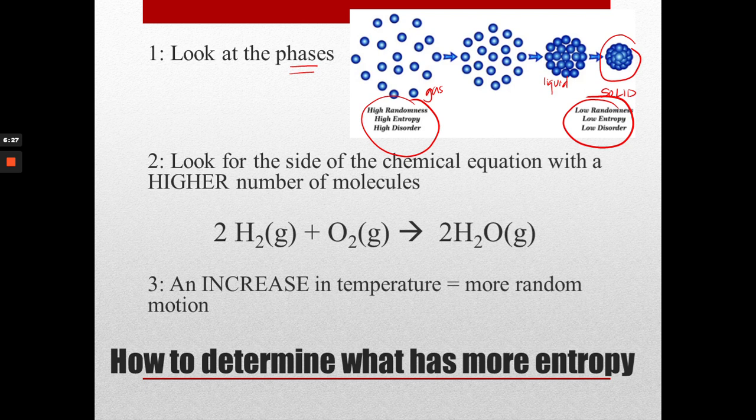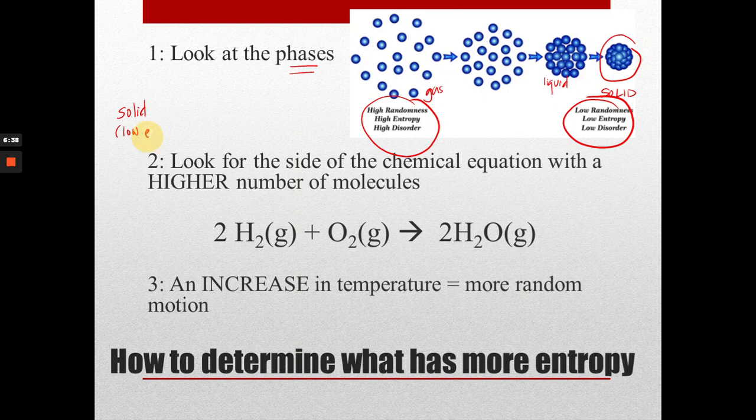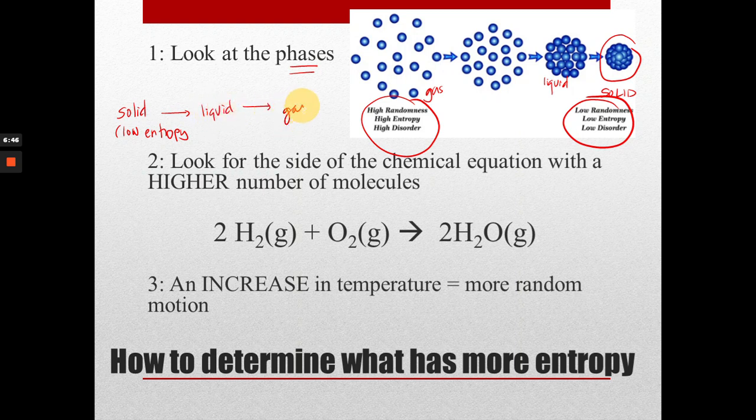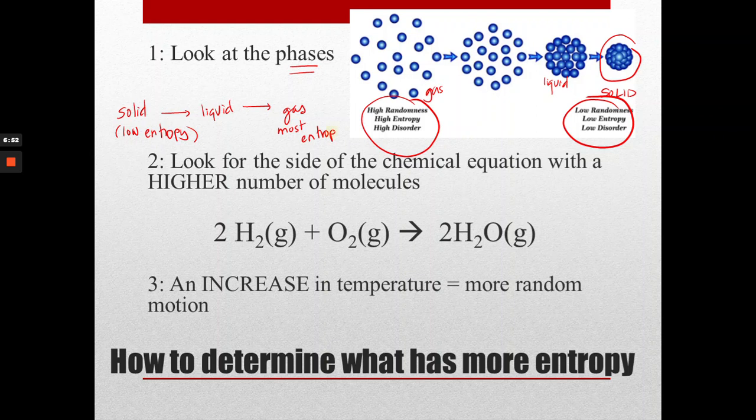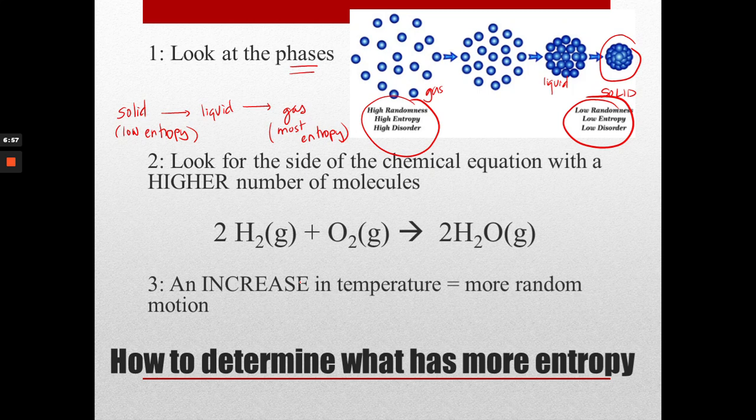So we're going to look at the phases. So on your notes, you can write it like a solid, low entropy to a liquid and then to a gas which has the most entropy. So we can look at the phases that are indicated on our chemical reaction. And we can see if one side has a solid and the other side has a gas, we know that it will want to naturally go towards the direction of the gas because that's more disordered.